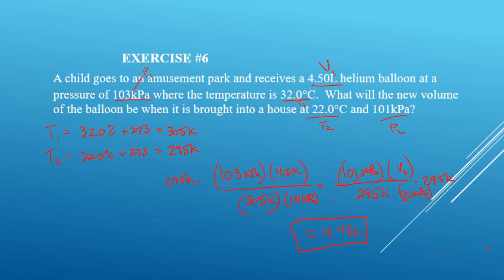Let's check significant figures: we have 3, 3, 3, and 3 — so 4.43 is correct. I should have had 305.0 and 295.0, just to be consistent with our significant figures, because rules for addition and subtraction are different, if you recall.